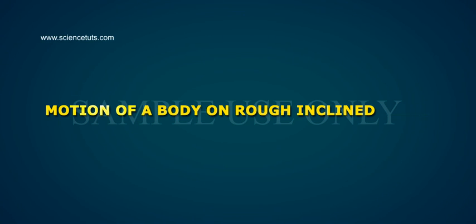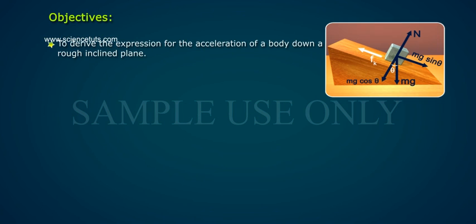Motion of a body on a rough inclined plane. Objectives: To derive the expression for the acceleration of a body down a rough inclined plane: a equals (sin θ minus μk cos θ)g.